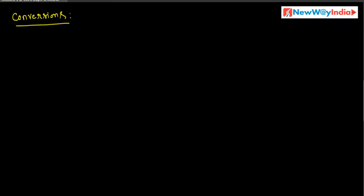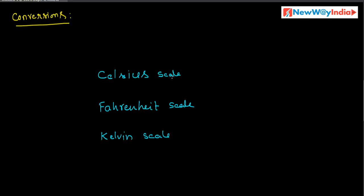In this session we will discuss conversions between Celsius scale, Fahrenheit scale, and Kelvin scale — that is Celsius to Fahrenheit, Fahrenheit to Celsius, Fahrenheit to Kelvin, Kelvin to Fahrenheit, and Kelvin to Celsius. In this way we can convert temperature in different scales. So what are the important formulas for Celsius, Fahrenheit, and Kelvin? Let us see.